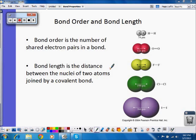So bond order is simply the number of shared electron pairs in a bond. So that means that if I have a single bond, the bond order is one. Double bond, the bond order is two. Triple bond, the bond order is three.